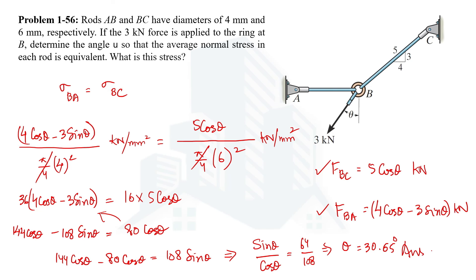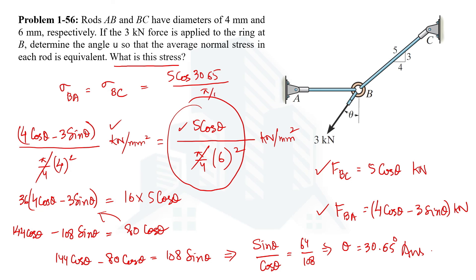At the end of this question we are also asked to calculate the stress. Putting the value of theta into either expression, for simplicity let's use 5 cos 30.65 divided by (π/4 × 6²). Since the force is in kilonewtons, it must be converted to newtons by multiplying by 1000. Performing the calculation gives a stress of 152 MPa, which is newtons per millimetre squared. So we have both answers: theta equals 30.65 degrees and stress equals 152 MPa. Thank you for watching this video.